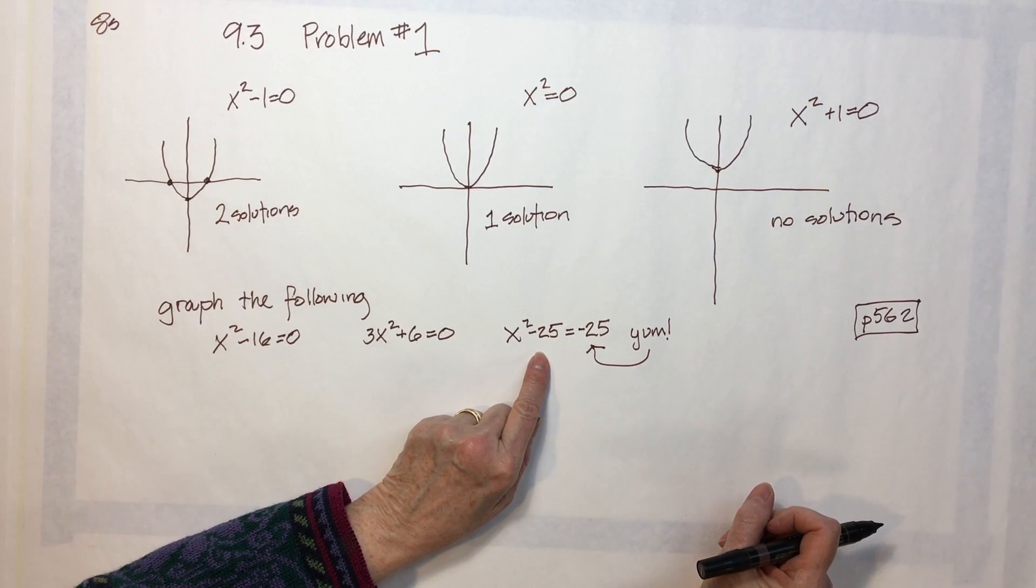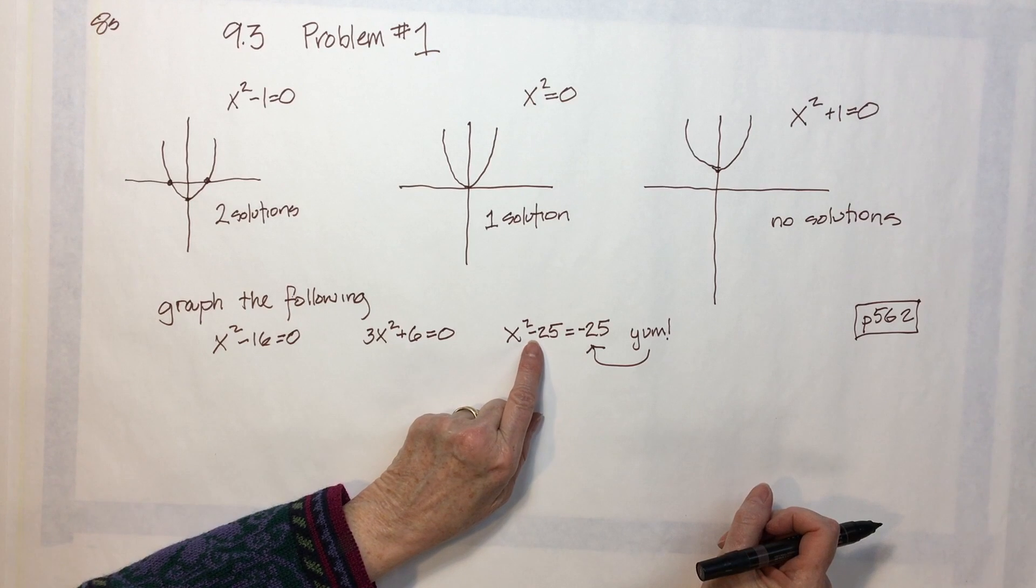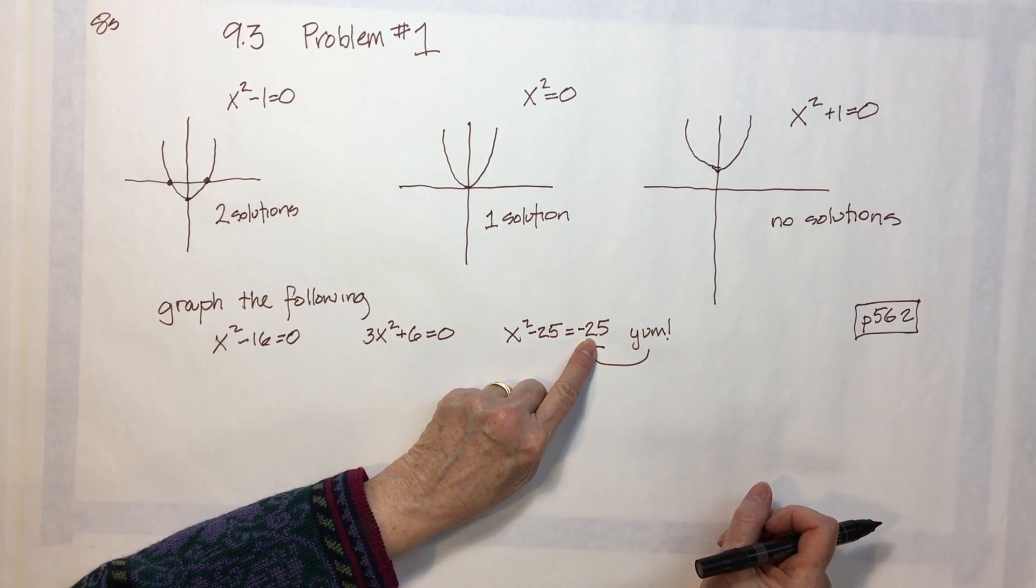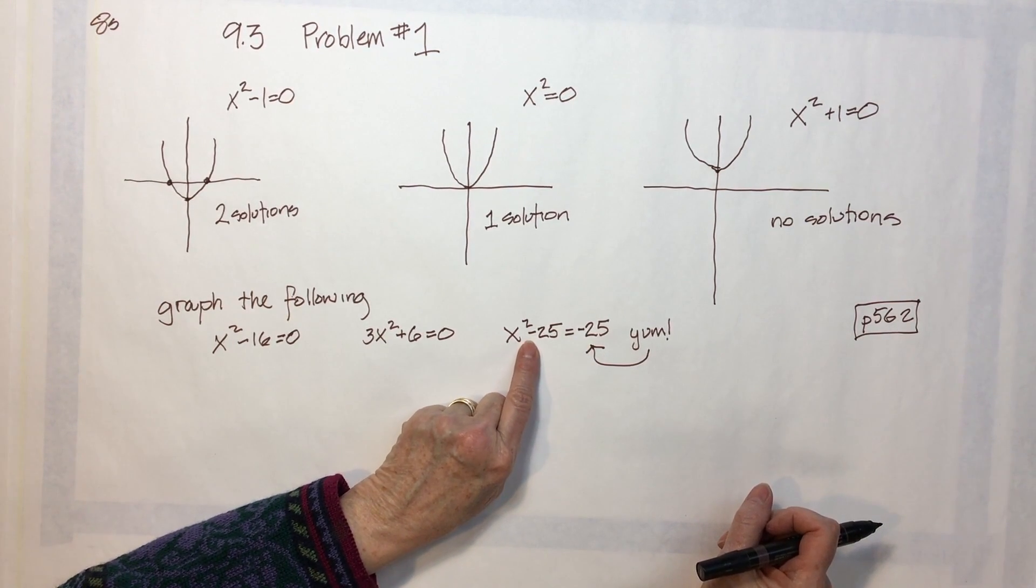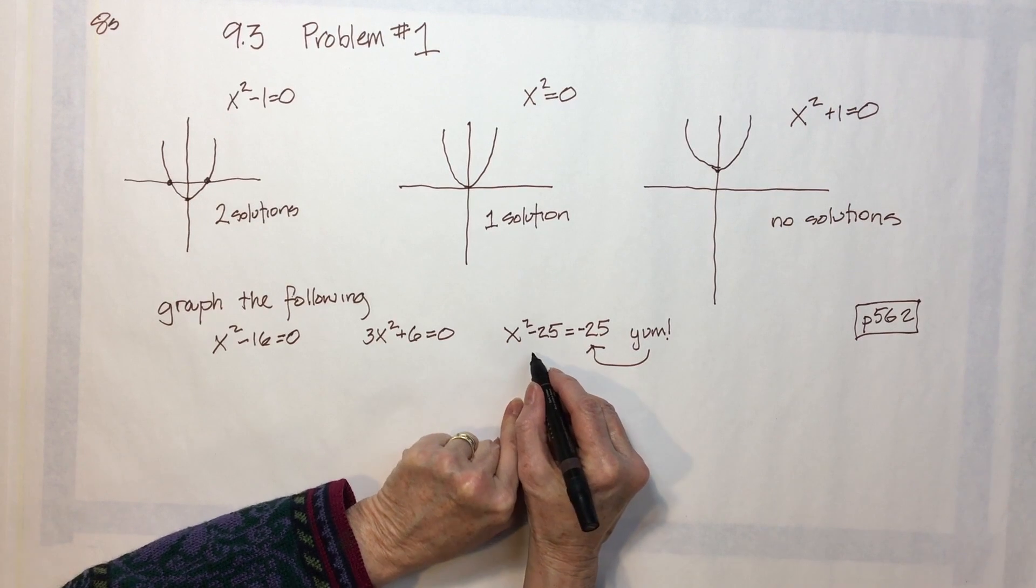Over here, I think I'd have to move this over here. So I'd do that by adding 25 on both sides.